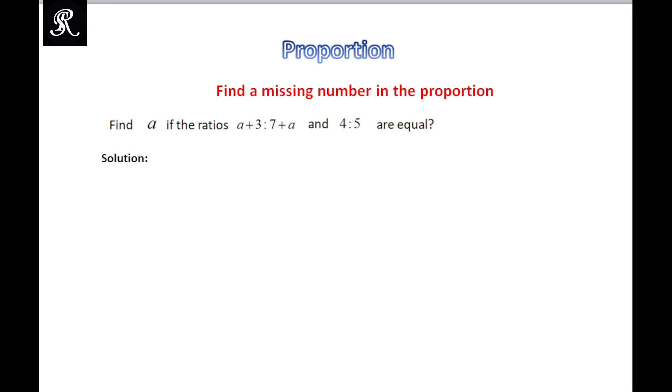Assalamualaikum. Here we have another proportional problem where we need to find the missing number. Find a if the ratios a+3:7+a and 4:5 are equal.